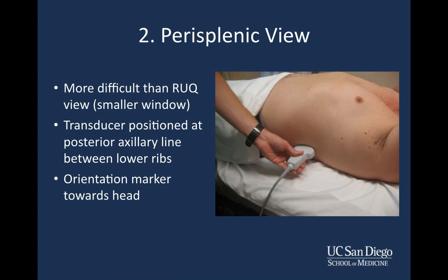Now let's talk about the perisplenic view. This is a bit more difficult than the right upper quadrant view because the spleen in normal condition is much smaller than the liver, giving you a smaller acoustic window. One important difference: position the transducer at the posterior axillary line, not the mid-axillary line. On the right upper quadrant you place the probe at mid-axillary, but here you're going to be placing the probe almost with your knuckles touching the bed — very posterior. Align the transducer in the posterior axillary line at the lower costal margin, with the orientation marker pointing towards the patient's head.